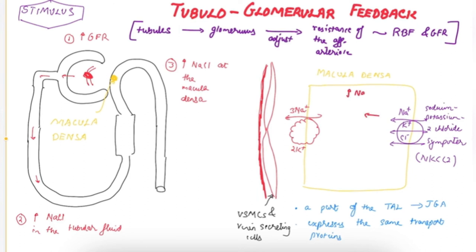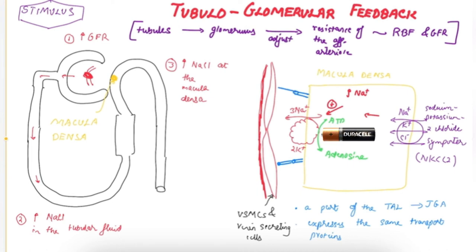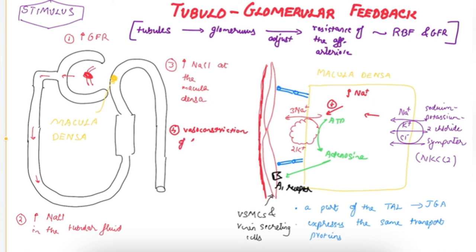Once sodium is inside the cell, it stimulates the sodium-potassium ATPase pump. As a result, ATP is converted to adenosine — the energy is broken down. There are gap junctions between the macula densa and the vascular smooth muscle cells or granular cells. Adenosine acts on the adenosine A1 receptor. In other vascular beds it causes vasodilation, but here it causes vasoconstriction of the afferent arteriole and a decrease in the release of renin.